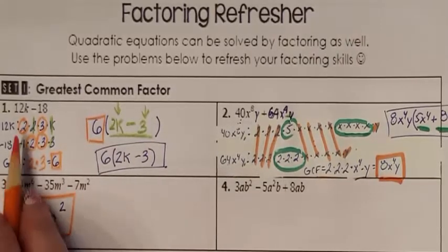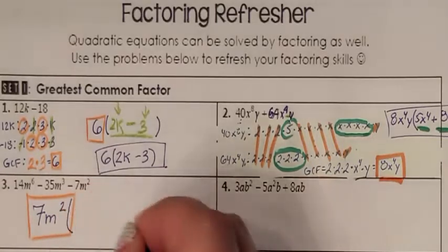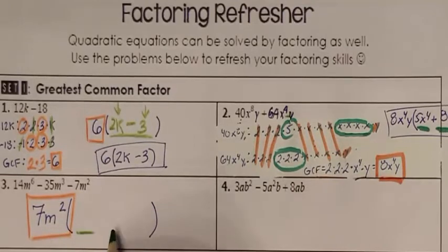This is what they all have in common if you did your prime factorization lists. Now what is left over? Because there's three terms, there would have been three lists, which means I need three chunks of leftovers.